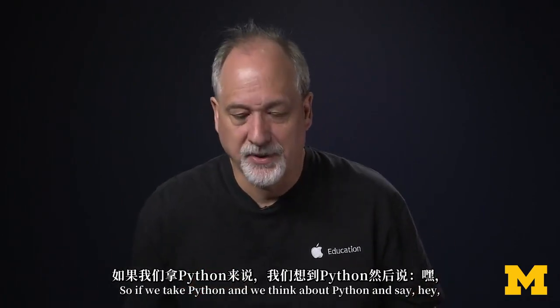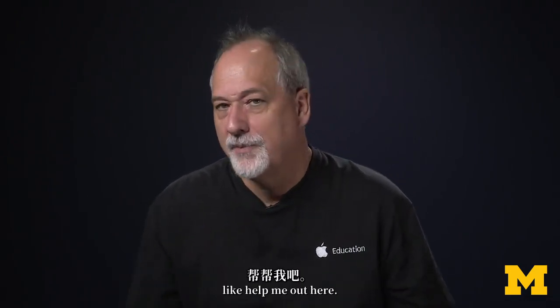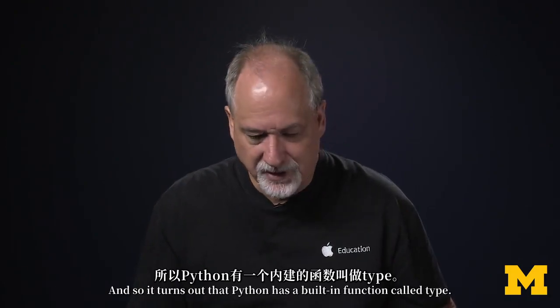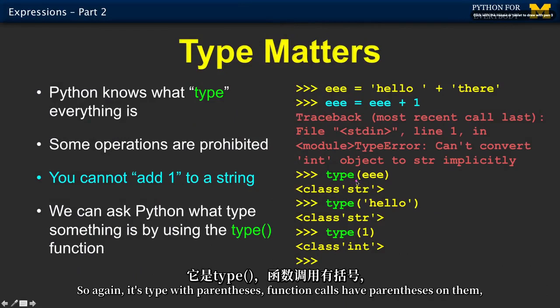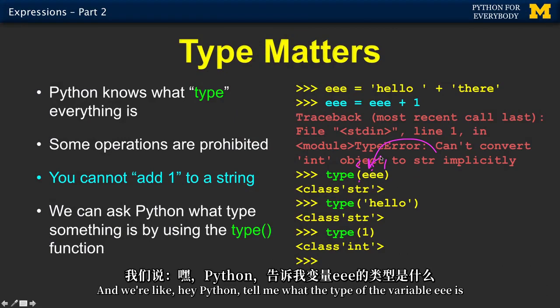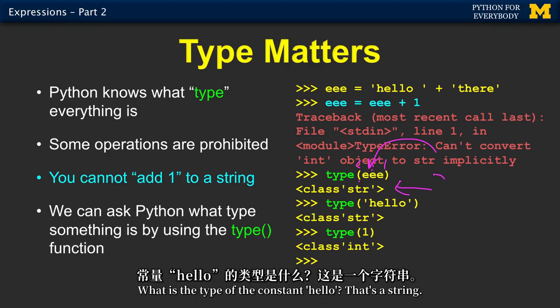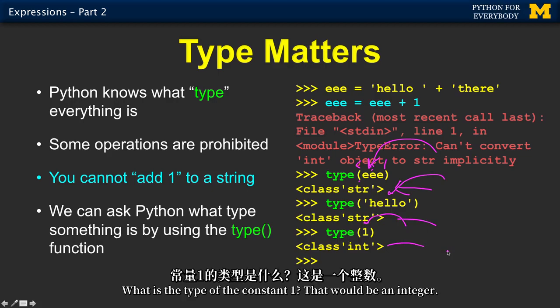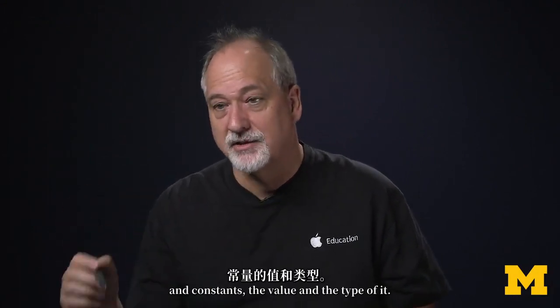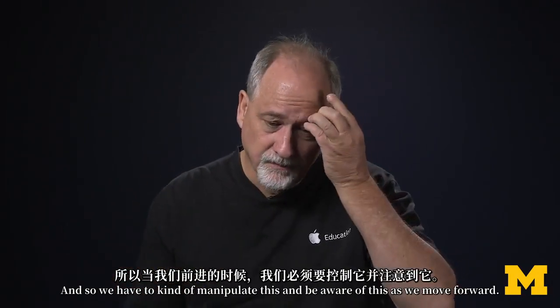And so if we take Python and we think about Python and say, hey, you're so picky. And you blow up if I do the least little mistake on types. Like, help me out here. And so it turns out that Python has a built-in function called type. So again, it's type with parentheses. Function calls have parentheses on them. And we pass something in. And we're like, hey, Python, tell me what the type of the variable EE is. And then Python prints out, oh, it's a string. What is the type of the constant, quote hello quote? That's a string. What is the type of the constant one? That would be an integer. And so Python keeps track of the value of variables and constants, the value and the type of it.